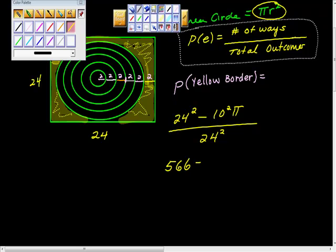576 minus 10 squared is 100. What's 100 times pi? About 314. So about 314 over 576 is the probability. This is 576 here.